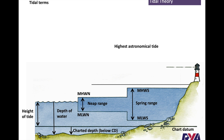Highest astronomical tide — sometimes shown as HAT — is the highest the tide will ever go. Bridge clearances on the chart are given as the clearance from highest astronomical tide to the underside of the bridge, so at all times you will have at least the stated clearance or more. Heights of bridges are given from highest astronomical tide.